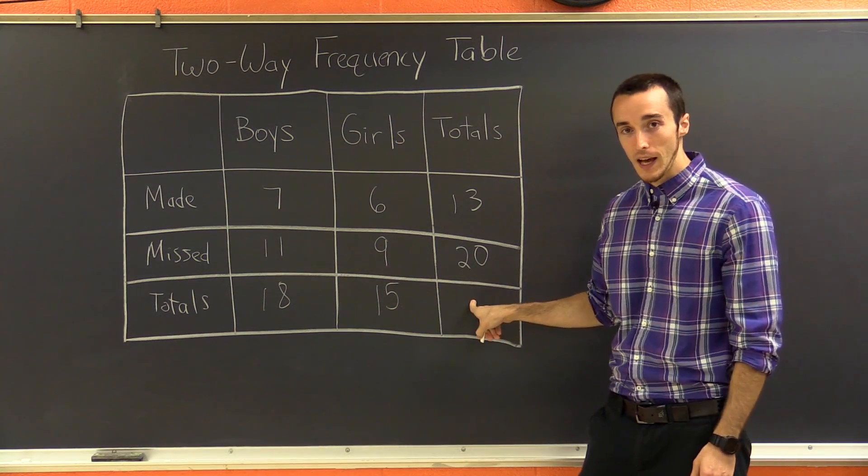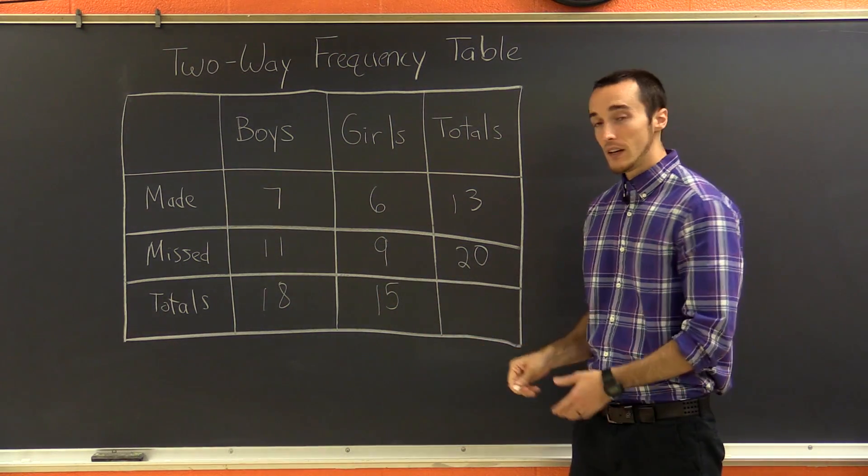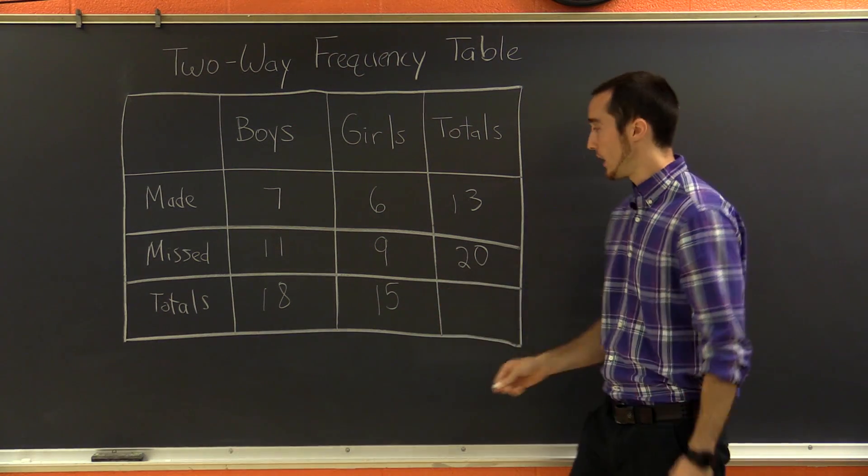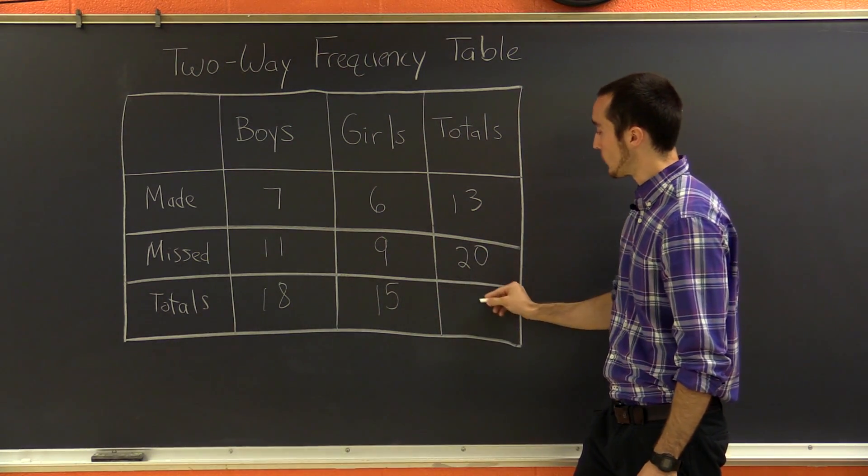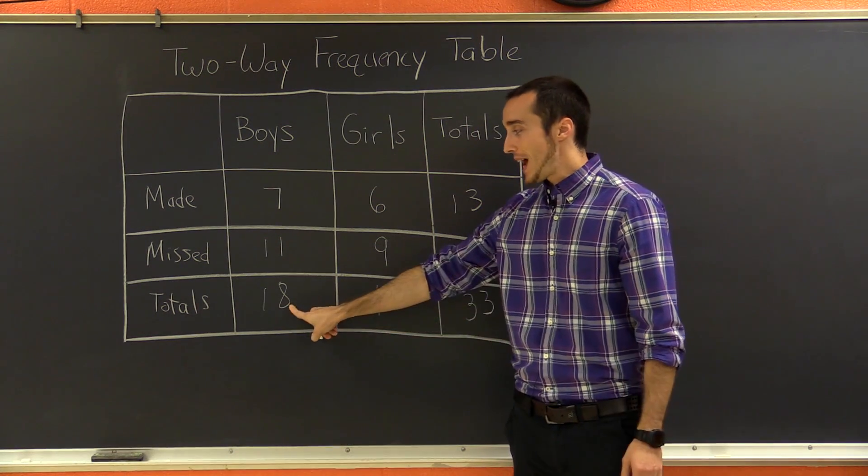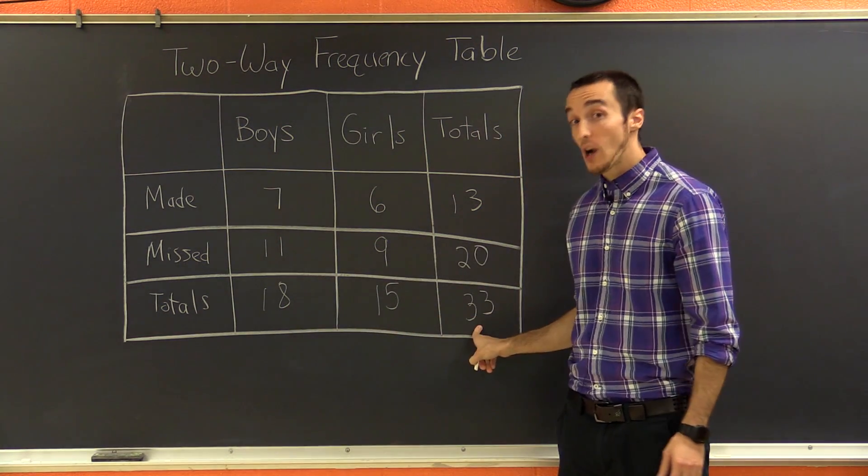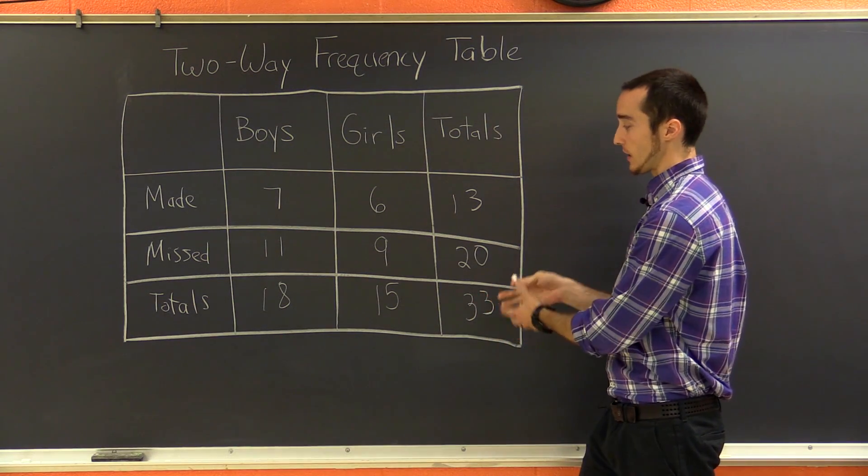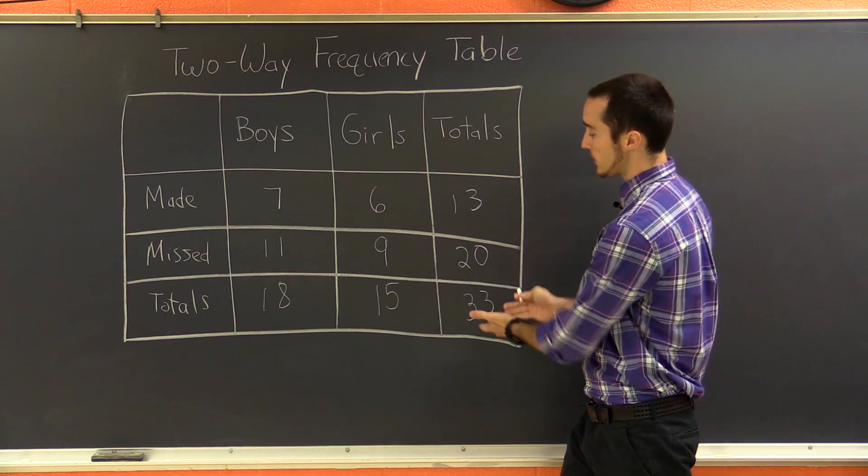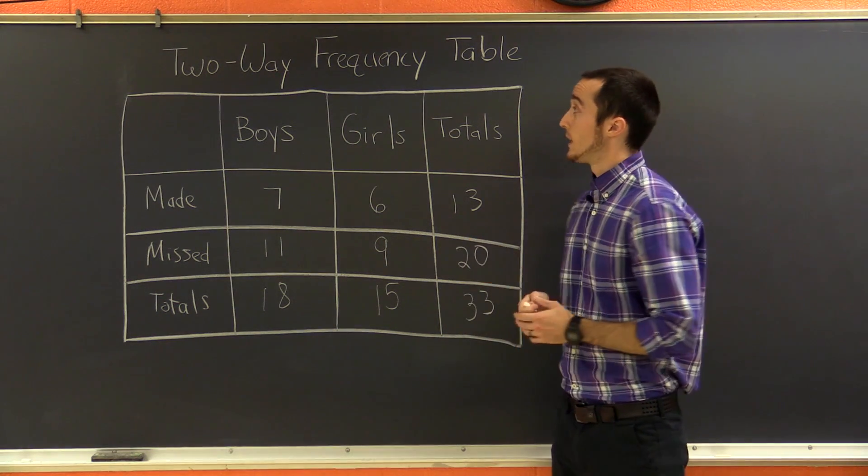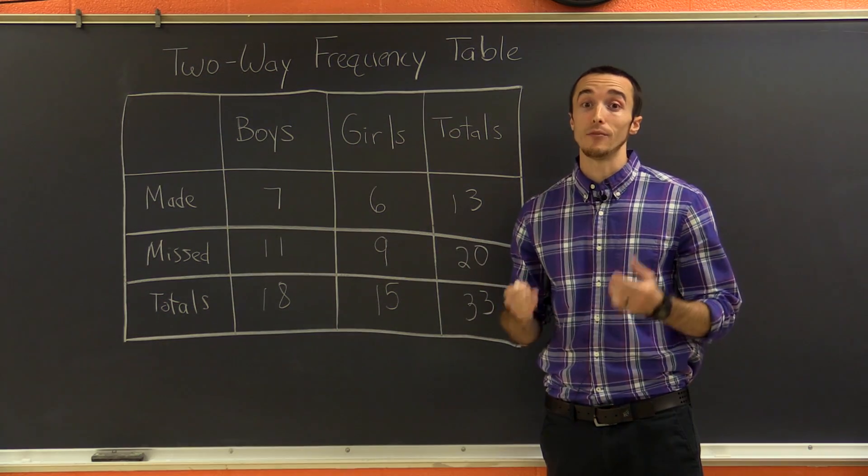Now, what goes in this bottom category? As you might imagine, it's the grand total or the total number of people in the class all together. So if we take 13 plus 20, we get 33. Now you'll notice that if we added 18 and 15, we also get 33. That's not a coincidence. That's just because that's how many people were in the class. So it has to total to 33 either way. So that is how we make a two-way frequency table.